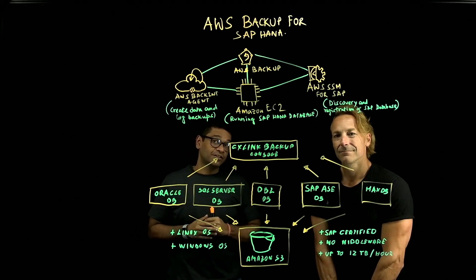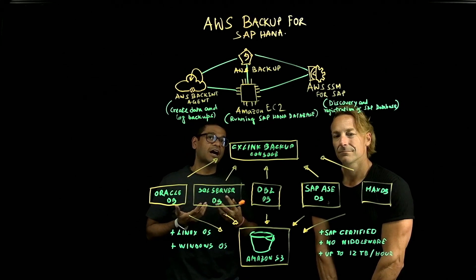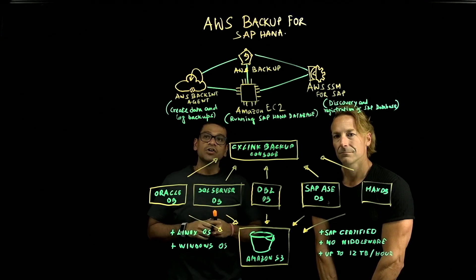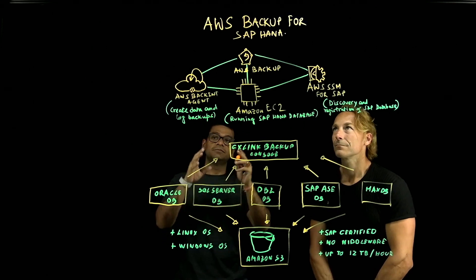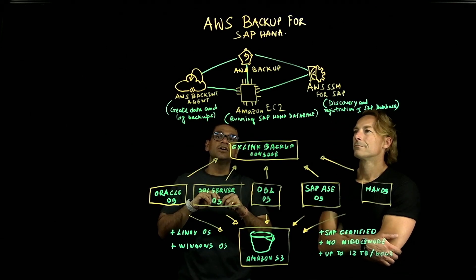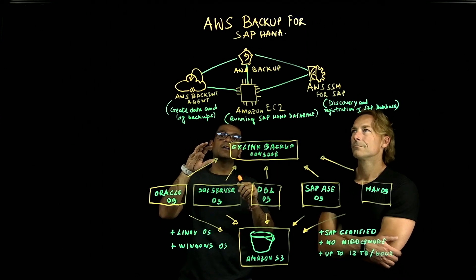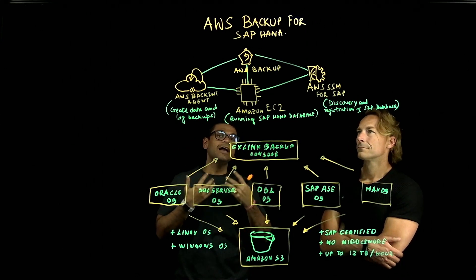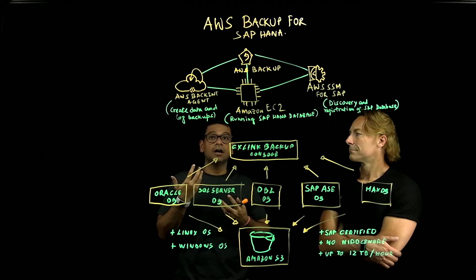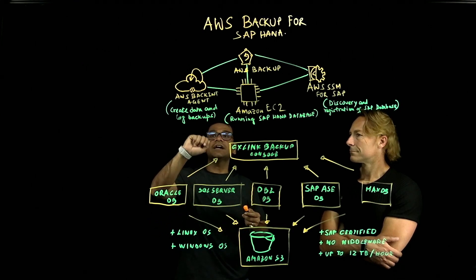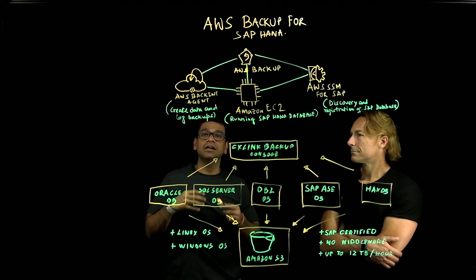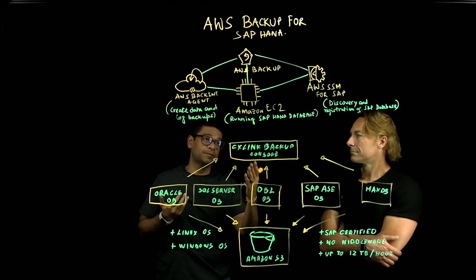Let's directly dive deep into the solutions and explain how these services work for our customers. Looking at this solution, the service diagram here on top is AWS Backup for SAP HANA. AWS Backup for SAP HANA is an SAP certified, application-consistent backup and restore solution for SAP HANA databases running on Amazon EC2 instances. On the left side, we are running the AWS Backup Agent alongside the SAP HANA databases on the same Amazon EC2 instance.